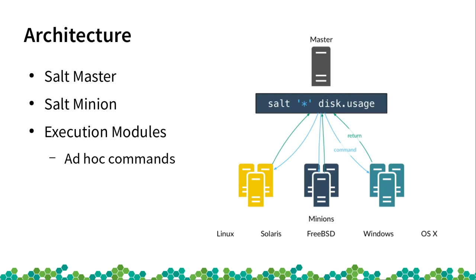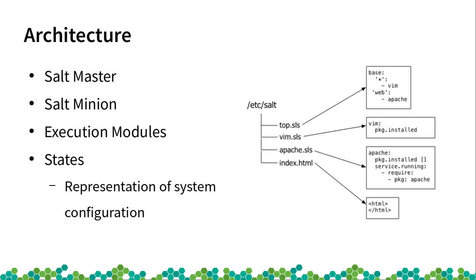All the things Salt can do are organized into different modules. One of these is execution modules. Execution modules just execute a command — for example, make a file, append something to a file, delete files. They do not check whether it's already configured or not; if a file already exists or already contains what you want, it just does it anyway. When you want a declarative configuration of the system, then you use Salt states.